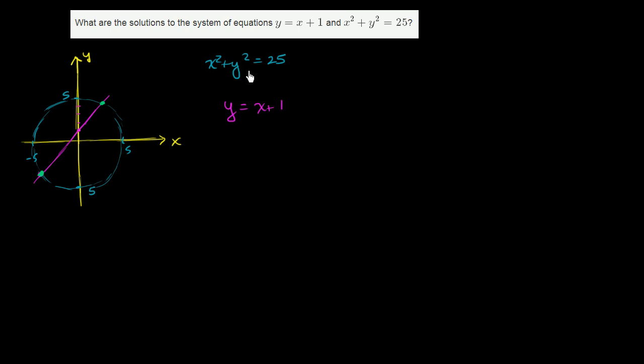So instead of saying x squared plus y squared equals 25, we can say x squared plus, and instead of writing a y, we're adding the constraint that y must be x plus 1. So x squared plus x plus 1 squared must be equal to 25.